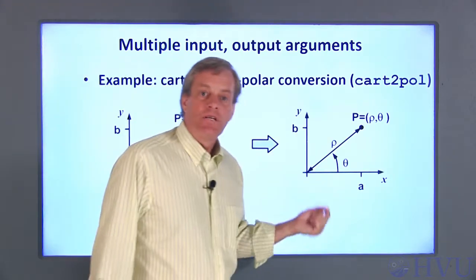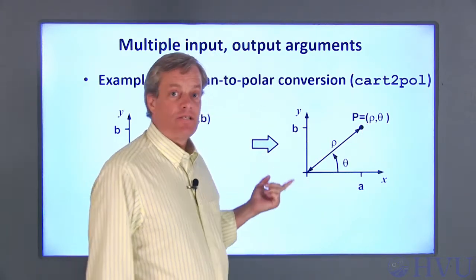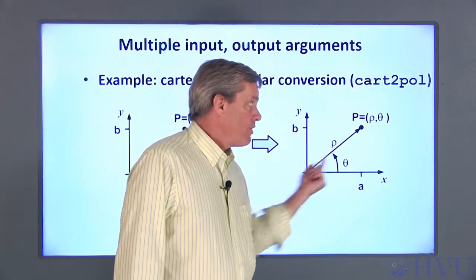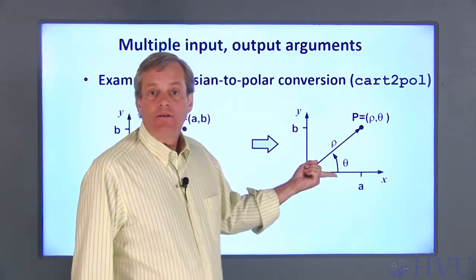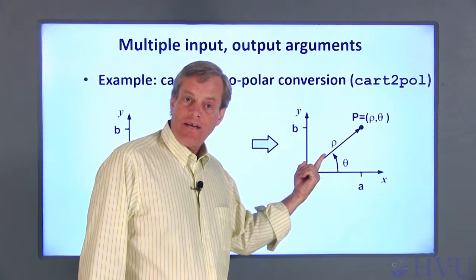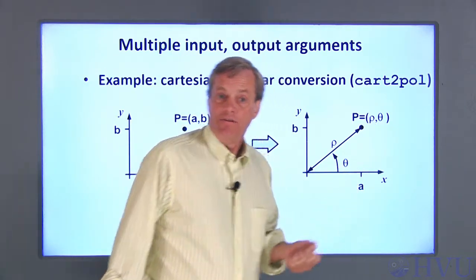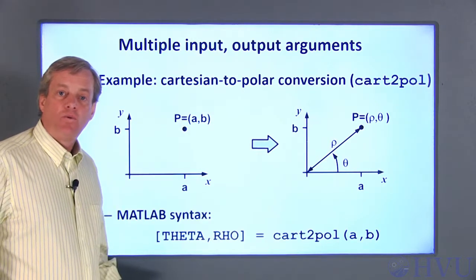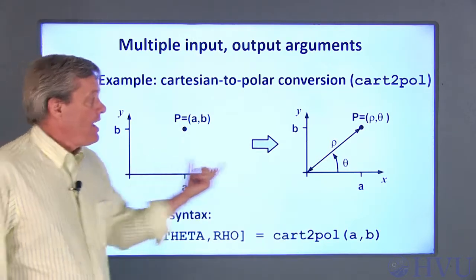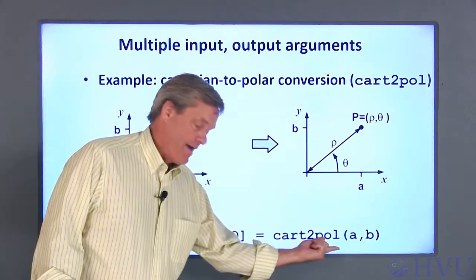Alternately, we can represent the point P in polar coordinates by its radial distance from the origin, represented by the Greek letter rho in our example, and the angular distance of the point from the positive x-axis, represented by the Greek letter theta on this figure. We can convert between the Cartesian coordinates, A, B, and the polar coordinates, rho, theta, with MATLAB's cart2pol command.